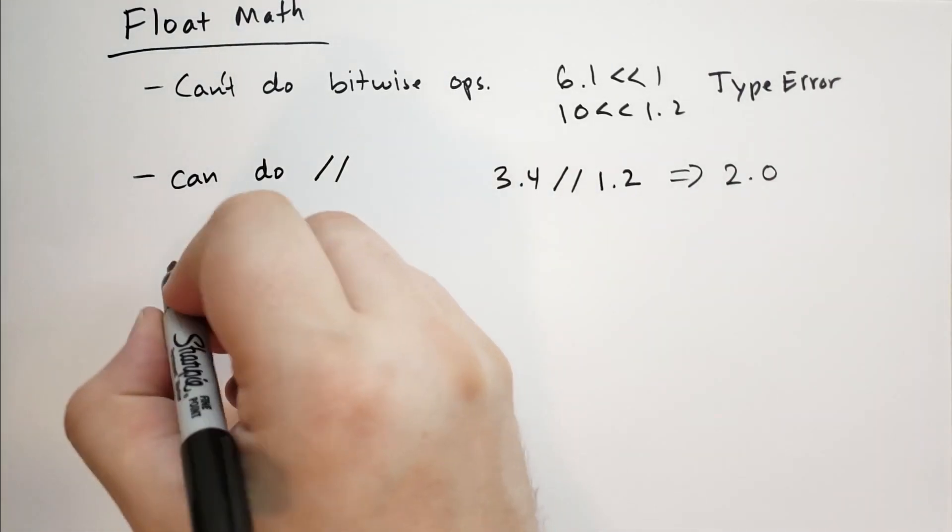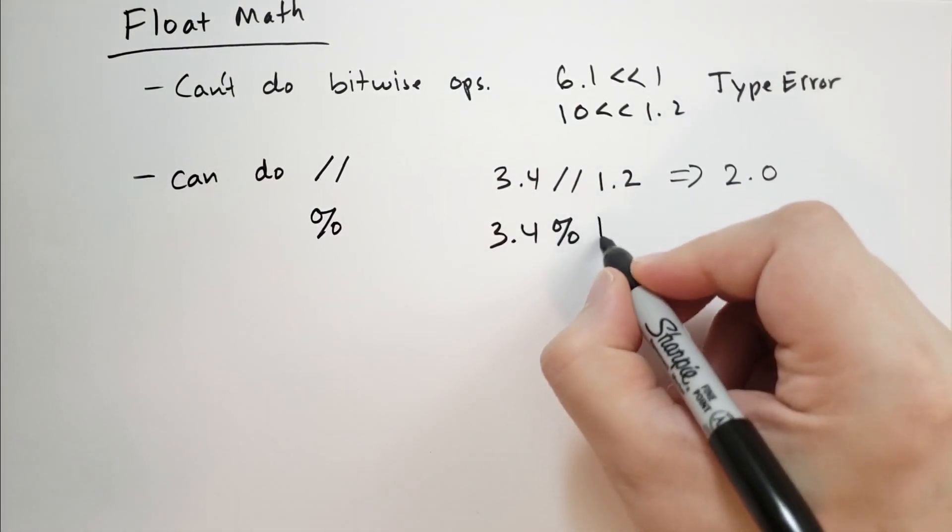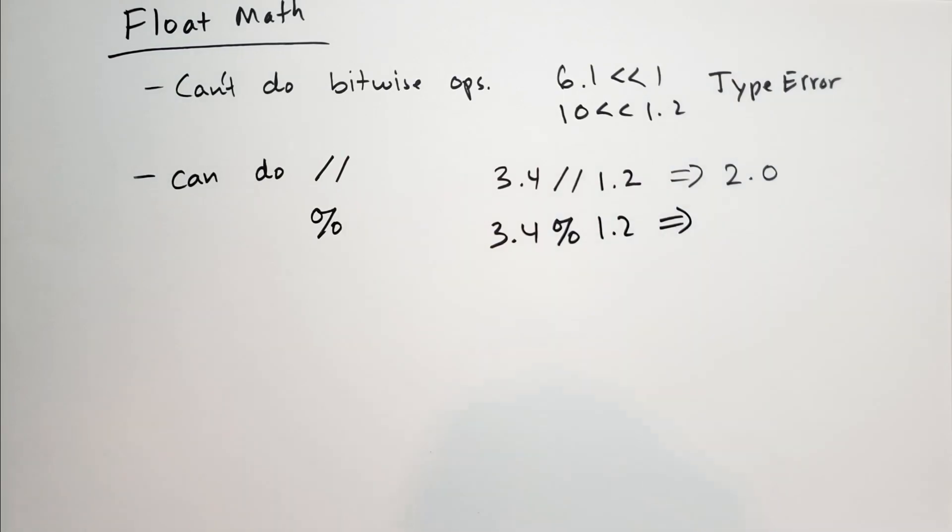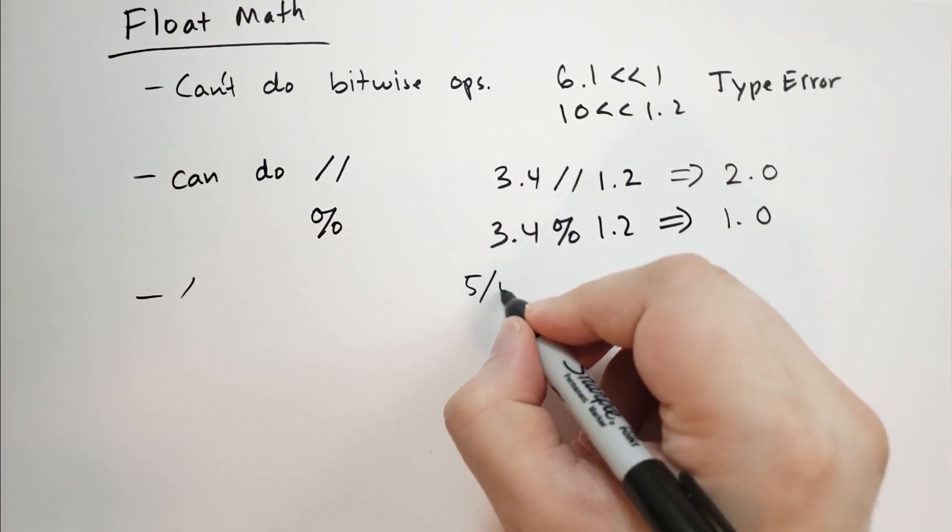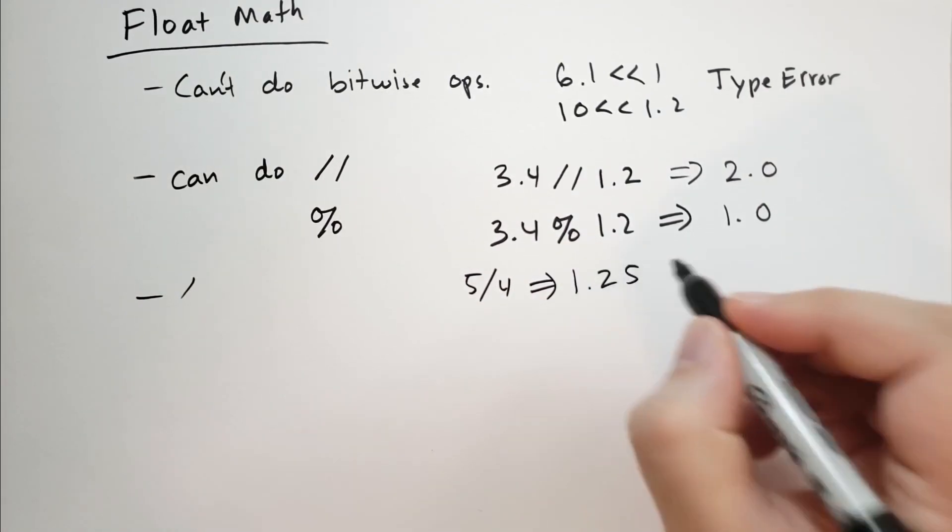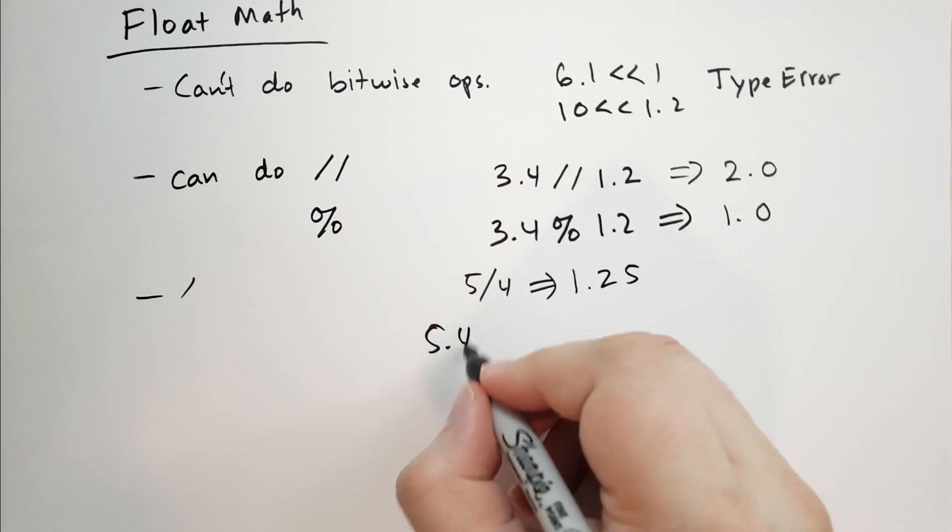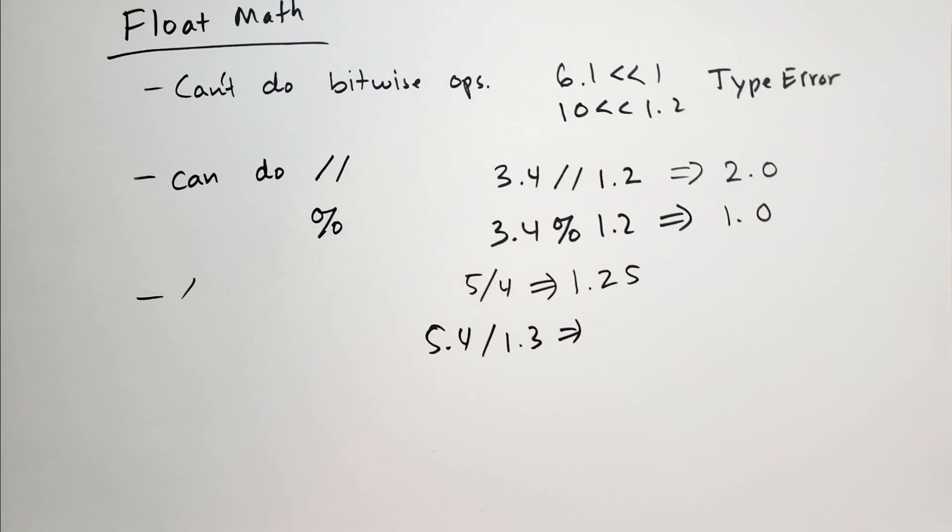And you can also do the remainder. So 3.4 modulo 1.2, that's going to give you the remainder. Which, what would that be? That would be 1.0. And then you can do regular division. So if you do like 5 divided by 4, what's that going to give you? Well, that's going to give you 1.25. But we can also do like 5.4 divided by 1.3. And that's going to give you some number that I don't want to calculate right now. Try that out. See what it gives you.